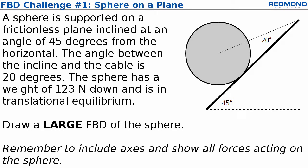Here's the situation. A sphere is attached to a cable and held against a frictionless plane. The sphere has a weight of 123 newtons down. See what I did? Weight is a vector, so it has magnitude and direction.